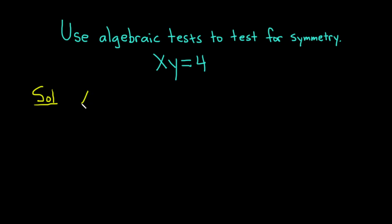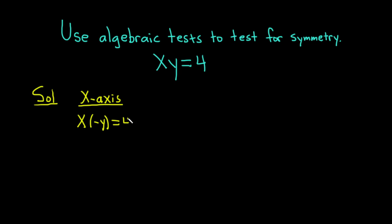Let's start first with x-axis symmetry. To test for x-axis symmetry, we replace y with negative y. And if we get the same thing, the answer is yes, we have x-axis symmetry. So, replacing y with negative y, we have x times negative y equals 4, which gives us minus xy equals 4. This is not the same equation, so the answer is no.